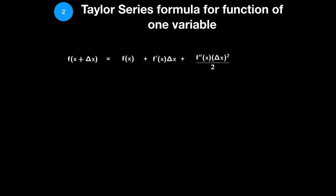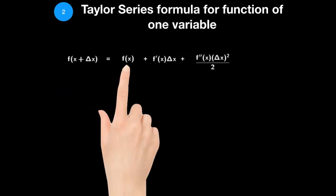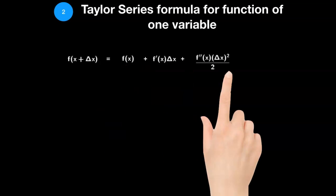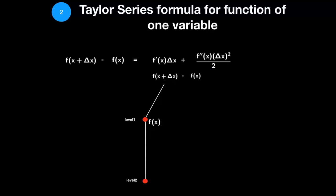For a function of one variable, f of x, Taylor series formula is as follows. I find it useful to visualize the Taylor's formula as a tree diagram. Each edge is a derivative of a function with respect to x, weighted by delta of x.